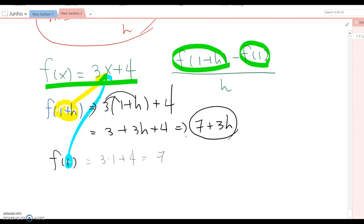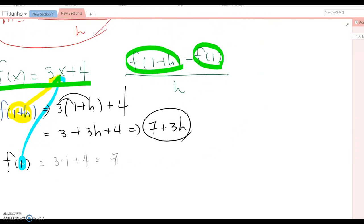Now we are ready to plug all those values into the formula. This becomes (7 plus 3h) minus 7 over h. Then 7 and minus 7 cancel down, so this becomes 3h over h. H cancels down, so it becomes 3. So that is the answer for this case.